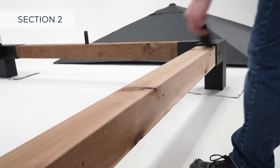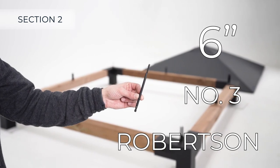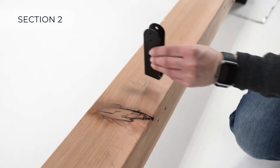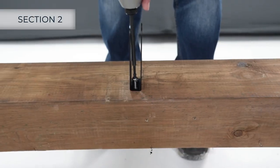To install the side brackets, a number 3 Robertson screwdriver at least 6 inches in length is required. Locate the markings made earlier, place the side brackets on top, and fasten with two screws.